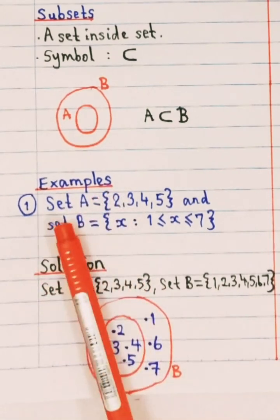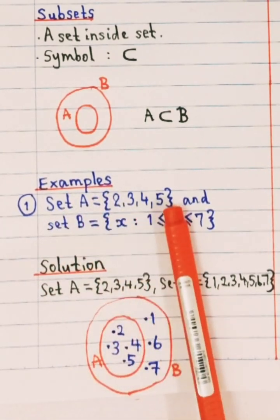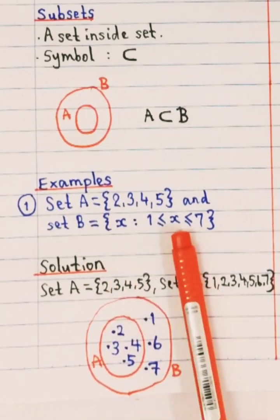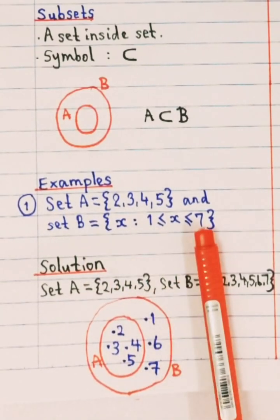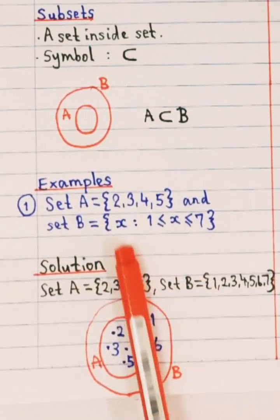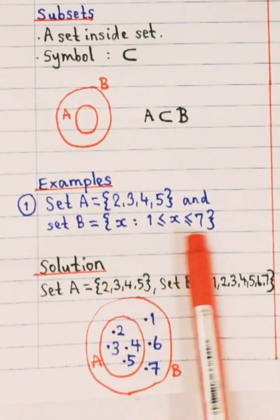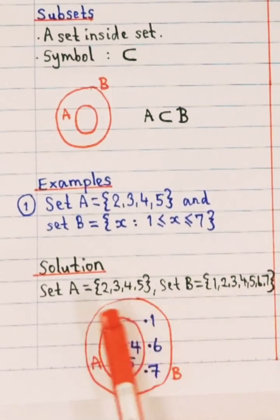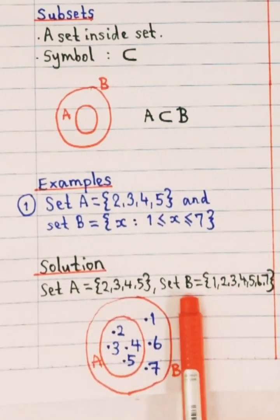Okay, now look at the example. If you are given set A equals to 2, 3, 4 and 5, and your set B equals to X such that X is between 1 until 7. So you're gonna list all the set A and then your set B. So the set B will go from 1, 2, 3, 4, 5, 6 and 7.